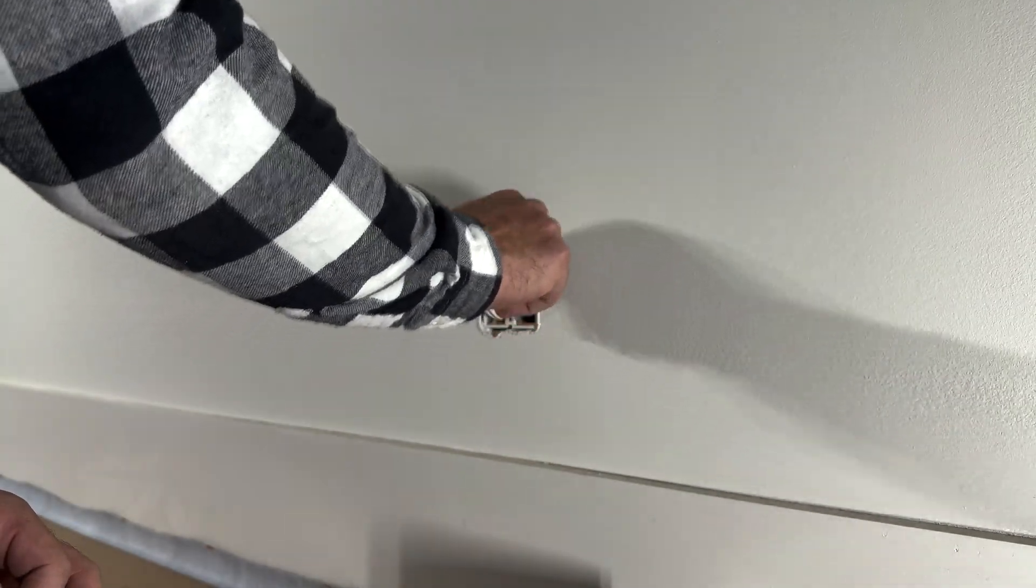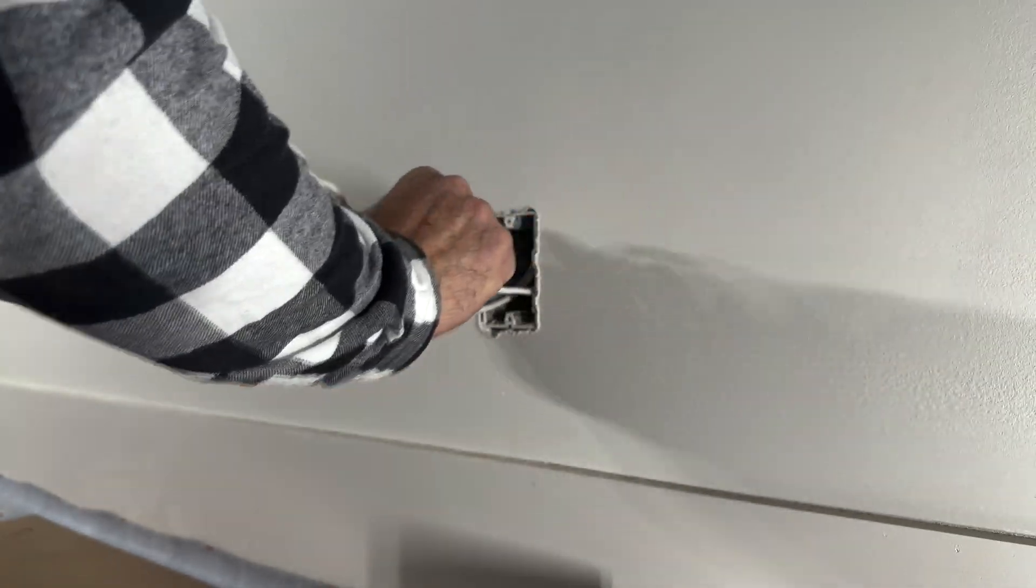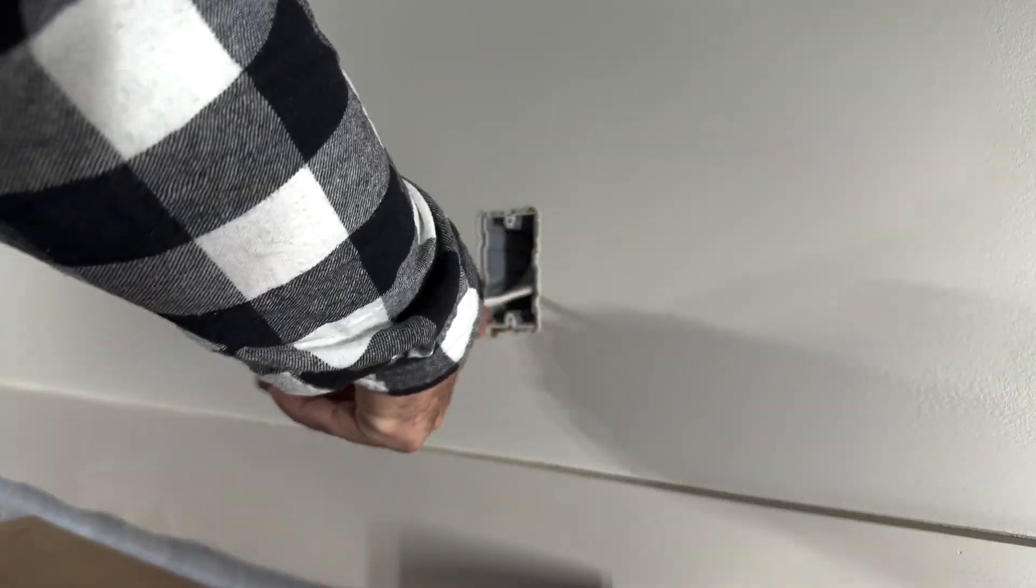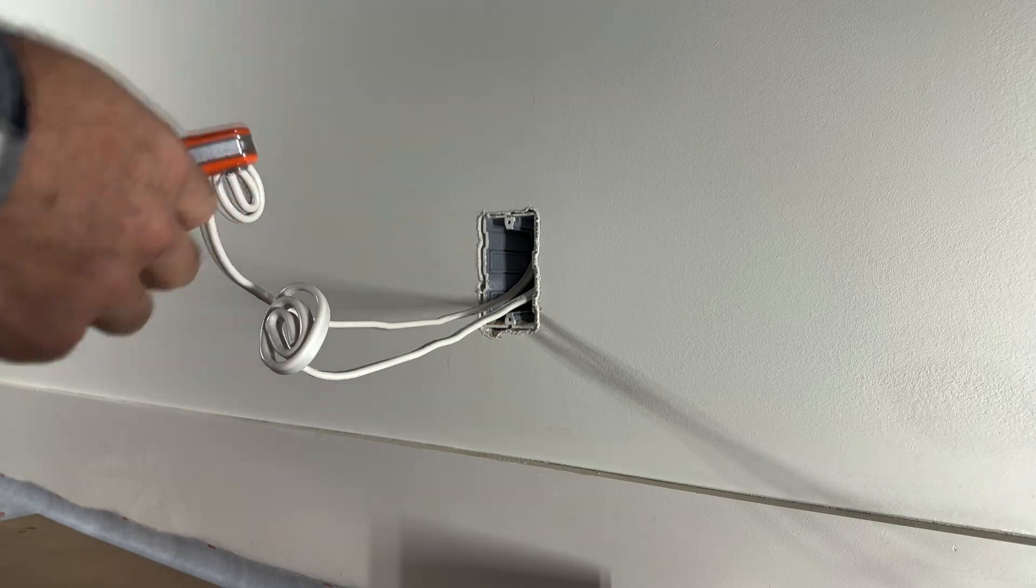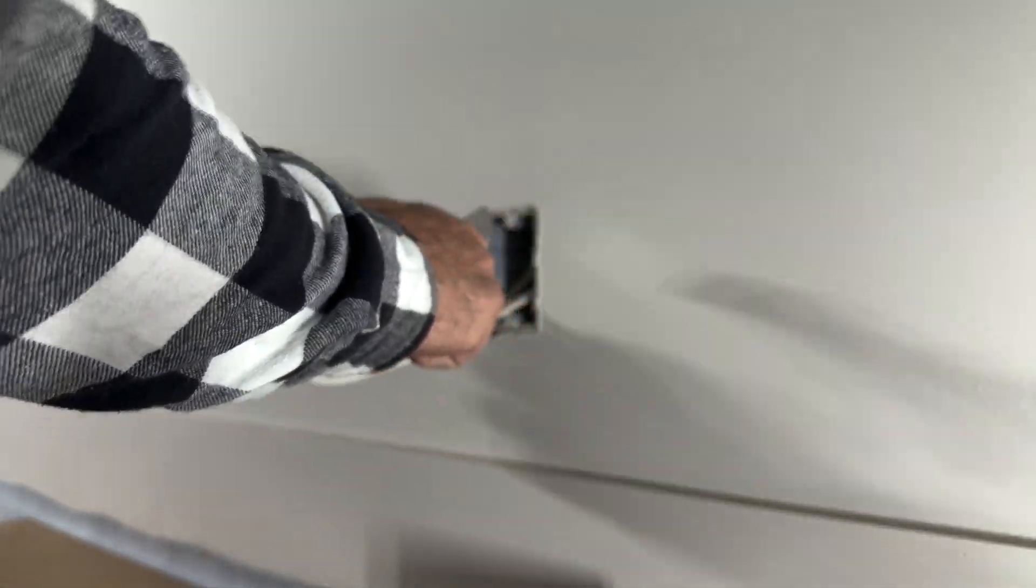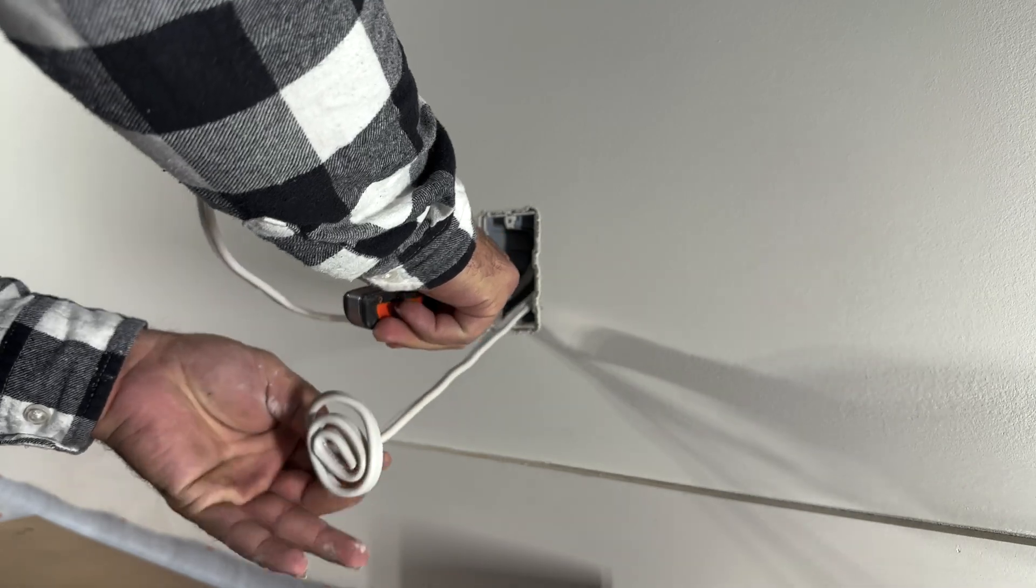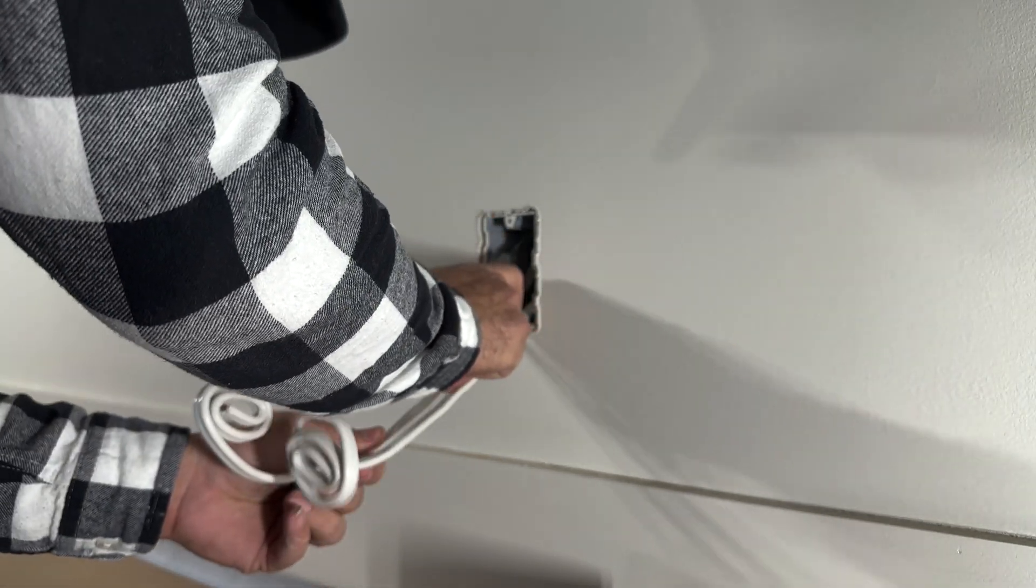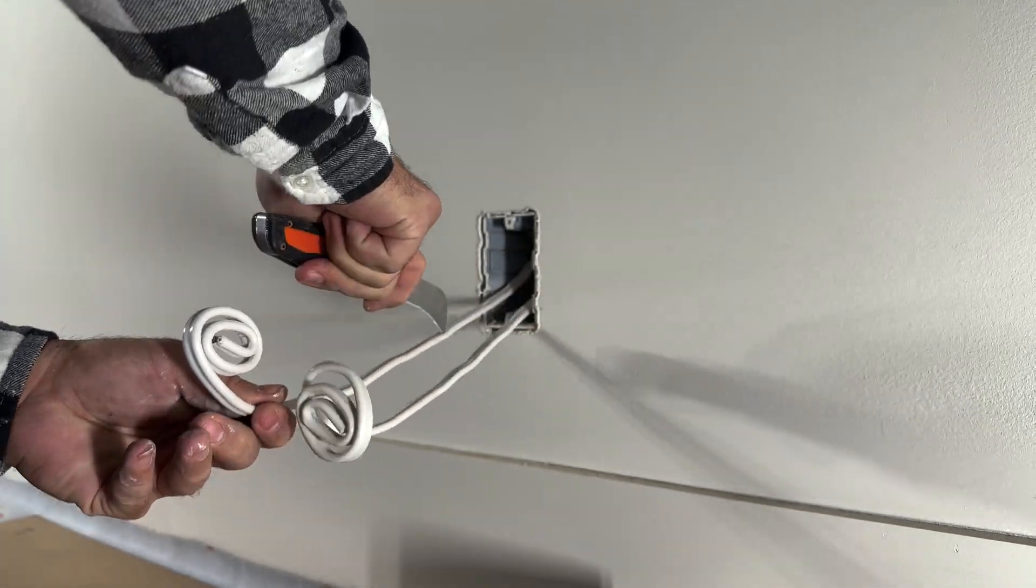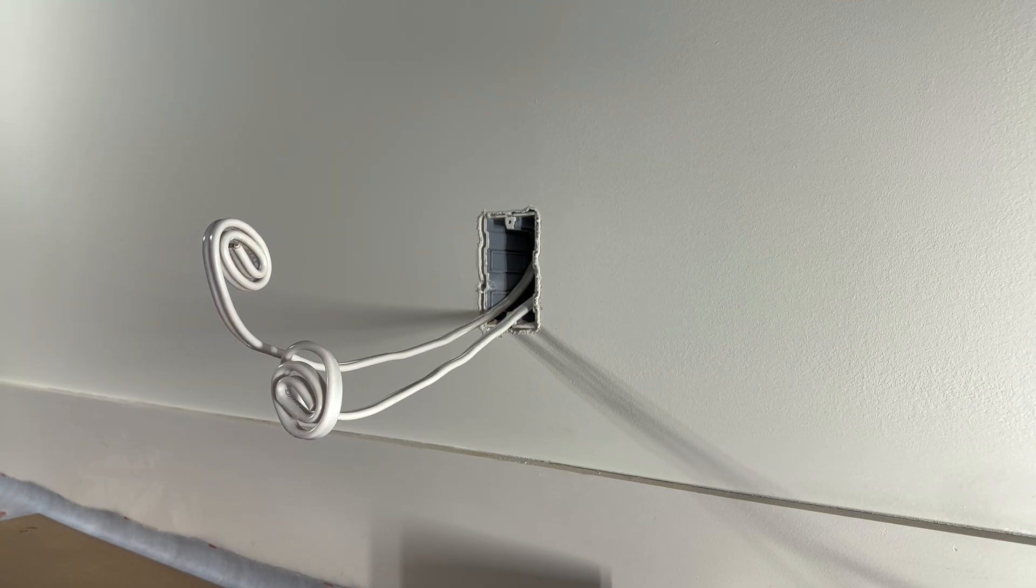Here we have our wires inside of our ICF box. We got plenty, which is great. We will proceed to use our hook knife to remove the Romex from the conductors. That is plenty.